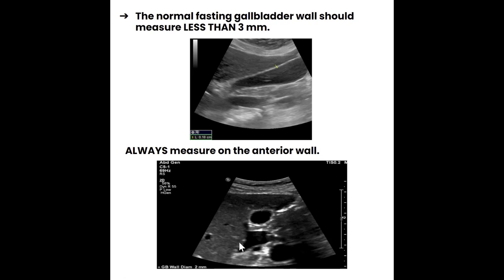Always measure the anterior wall and avoid measuring elsewhere as you'll get artifacts and artificially thickened walls. When scanning thin patients, be careful not to confuse the gallbladder with the IVC or aorta — if in doubt, apply color Doppler: the structure that does not fill with color is the gallbladder.